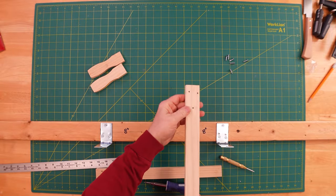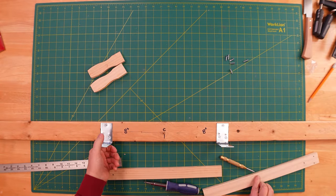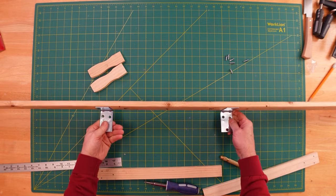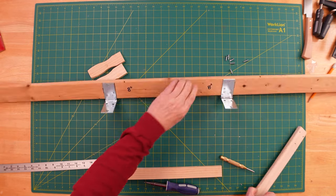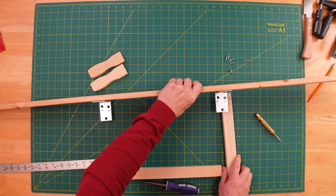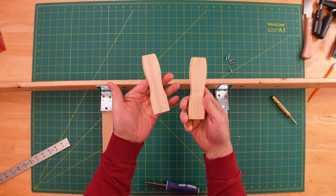So I've marked and pre-drilled the vertical pieces. And now that I have the brackets on the bottom here, I'm just gonna turn this over and start screwing these in.